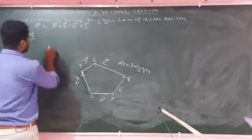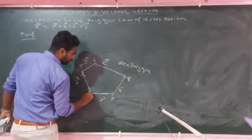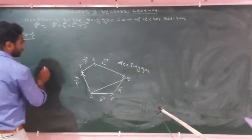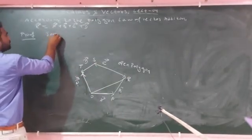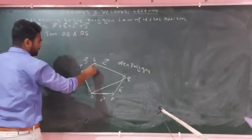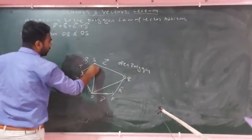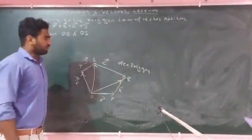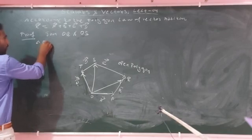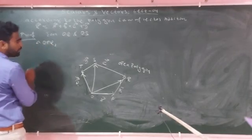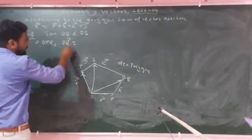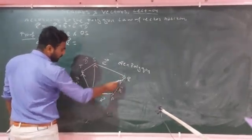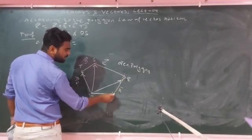Join OQ and join OS. So OQ and OS are joined. In triangle OPQ, this means OQ — triangle OPQ — OQ is the resultant by triangle law.